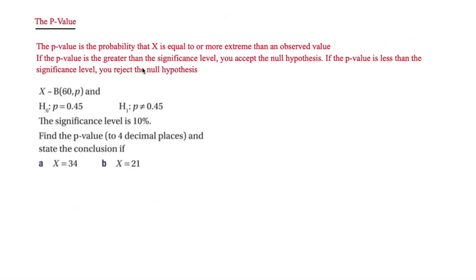In the next question we're looking at p-values. The p-value is the probability that x is equal to or more extreme than an observed value. If the p-value is greater than the significance level, you accept the null hypothesis. But if the p-value is less than the significance level, you reject the null hypothesis.